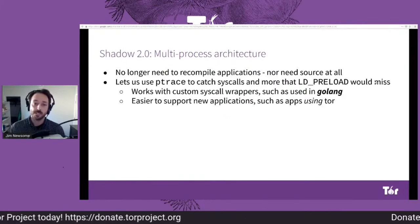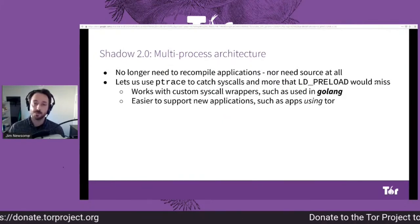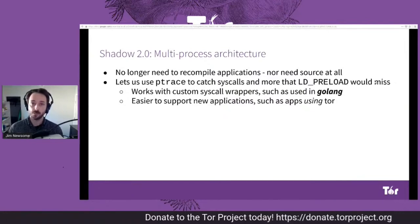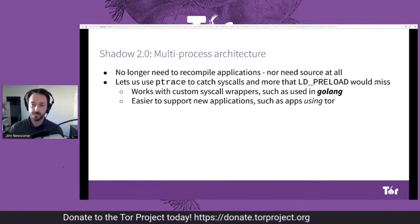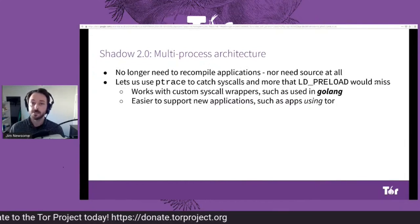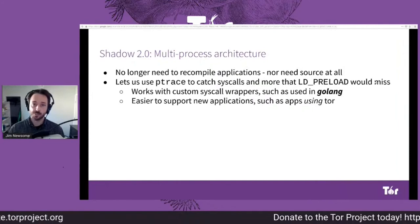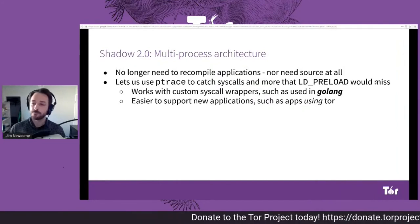This makes it possible to work on programs that use custom syscall wrappers, which includes Go programs, which previously didn't work in Shadow. And it makes it easier to support adding new applications into the simulation, such as not just Tor, but a browser using Tor.